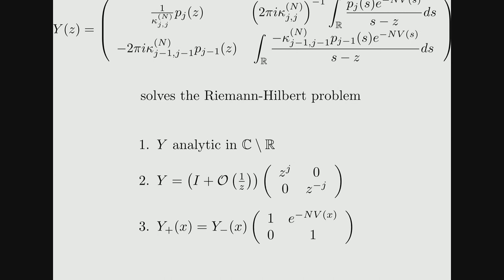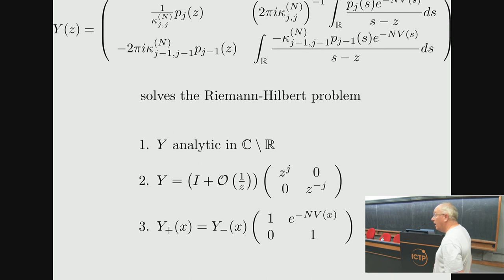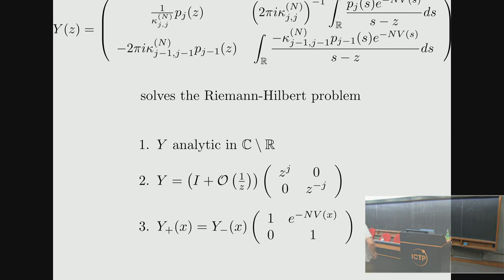Jinho, Peter, Thomas, and I were interested in discrete orthogonal polynomials and began working on their asymptotic behavior, then learned about the connection to random tilings. This slide shows the Riemann-Hilbert problem and its solution in the continuous case — for orthogonal polynomials on the real line that might arise from random matrix theory.